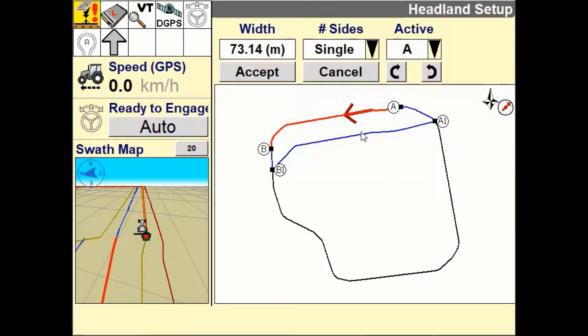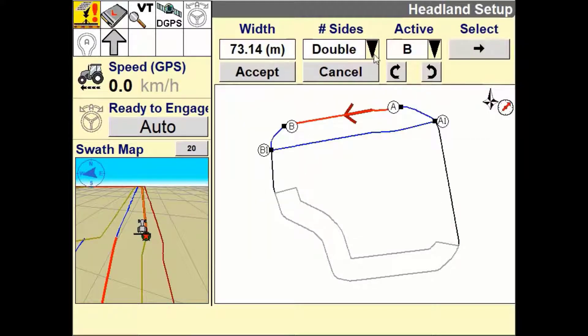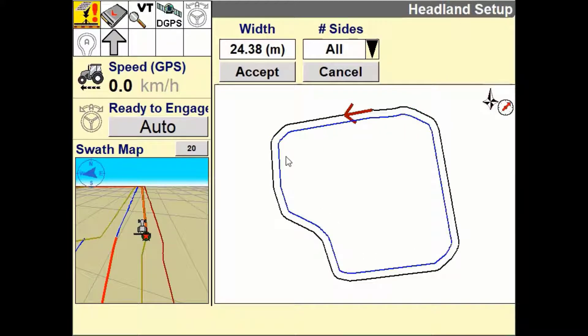The second option you have is to define what type of headland you require. Selecting single creates a headland at one end of the field. Selecting double allows you to create a headland for both ends of the field. Selecting all will create a headland for the entire way around the field.